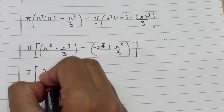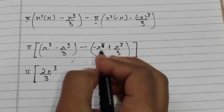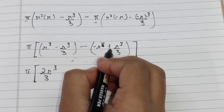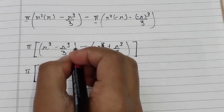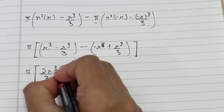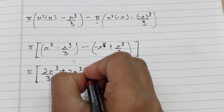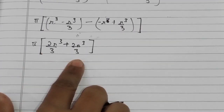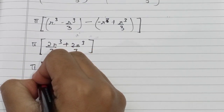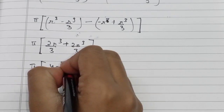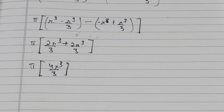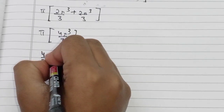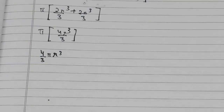So we have −2r³/3 and minus into minus gives +2r³/3. Adding these together gives π times 4r³/3, or written in the more familiar way, V = (4/3)πr³. This is the formula we learned in school for finding the volume of a sphere.